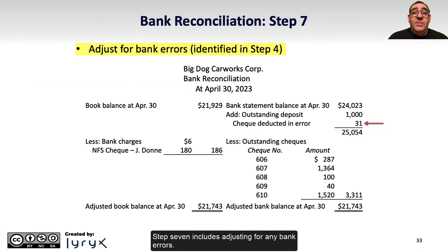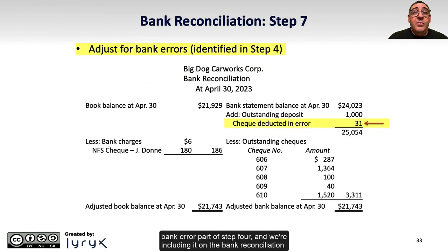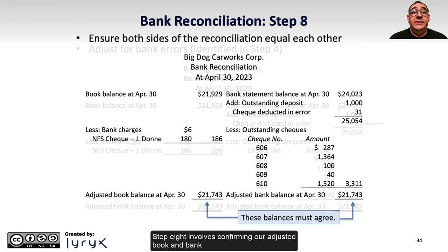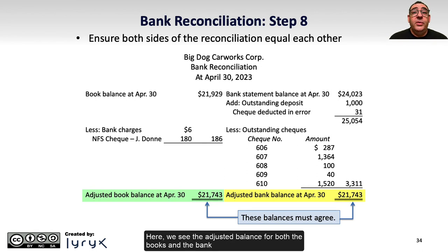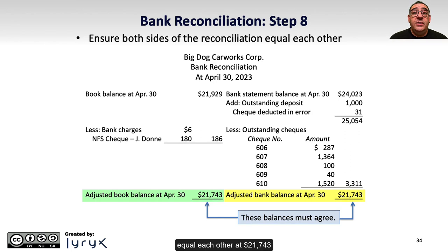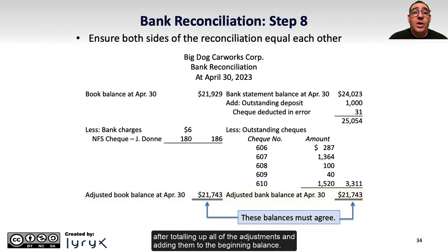Step 7 includes adjusting for any bank errors. In this case, we already identified the $31 bank error as part of Step 4, and we include it on the bank reconciliation by adding it back to the bank balance. Step 8 involves confirming our adjusted book and bank balances and ensuring that both sides are equal. Here we see the adjusted balance for both the books and the bank equal each other at $21,743 after totalling up all of the adjustments and adding them to the beginning balance.